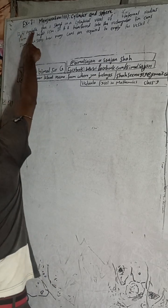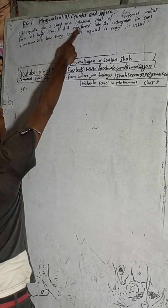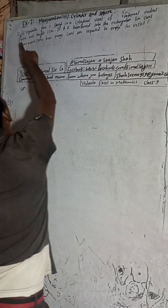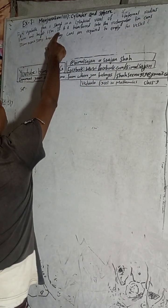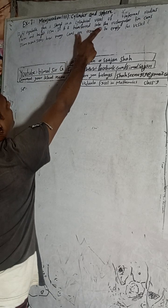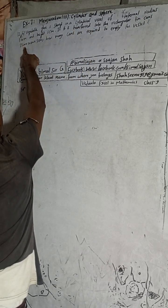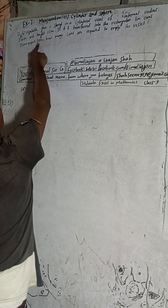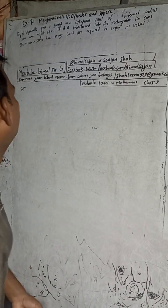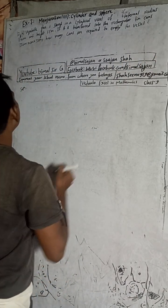Hi Class 9 and 10 students, welcome back to Bhimalswarji YouTube channel. This is question number 12b, Exercise 7.1, Mensuration - third part: cylinder and sphere, Vedant Excel in Mathematics Class 9. The question is: vegetable ghee is stored in a cylindrical vessel of internal radius 1.4 meter and height 1.5 meter. If it is transferred into rectangular tin cans of 33 cm × 10 cm × 5 cm, how many cans are required to empty the vessel?